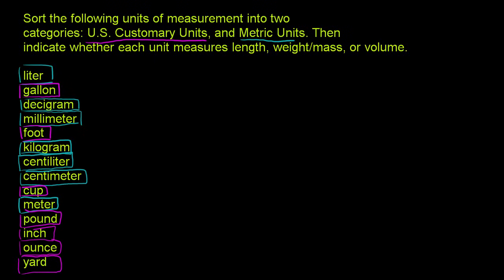Now, the next thing we need to figure out is whether something is a measure of length, weight, slash mass. And they're not exactly the same thing. Mass is how much of a substance you have. Weight is the force with which gravity is pulling on that mass. And it would change depending on what planet you're on. But on Earth, they tend to be used interchangeably. So we'll use it roughly interchangeably here. And then you have volume, or how much space something takes up.